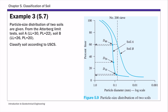This is example three of chapter five, soil classification. In this example we are going to classify two soils, soil A and B. In this video I'm going to focus on soil A first. On the right hand side is the particle size distribution curve of these two soils. We are given this PSD curve and also the Atterberg limit test results. We know the liquid limit LL of 30 and plastic limit PL of 22 for soil A.